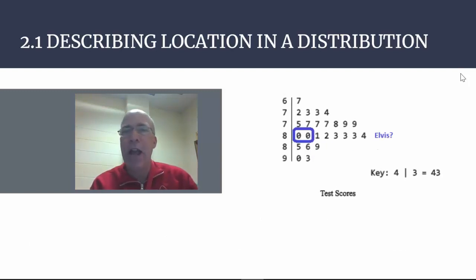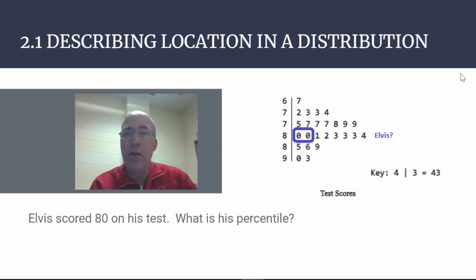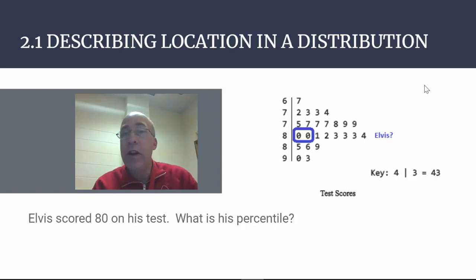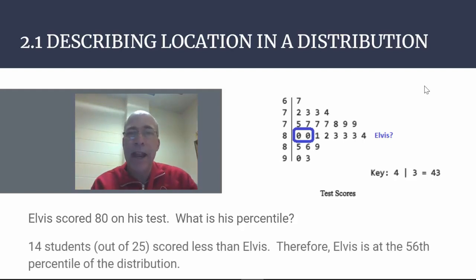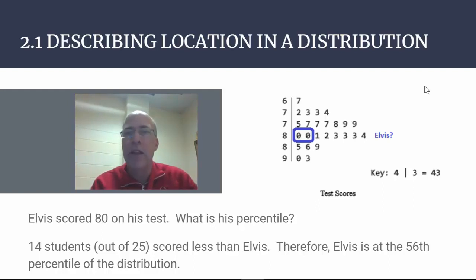How about a different student, Elvis? Elvis scored an 80 on his test. It doesn't matter which specific 80 represents Elvis. We just need to count the number of scores less than or equal to Elvis's score. By counting, we see that there are 14 of these — 14 out of 25 scored less than or equal to Elvis. Therefore, Elvis is at the 56th percentile.